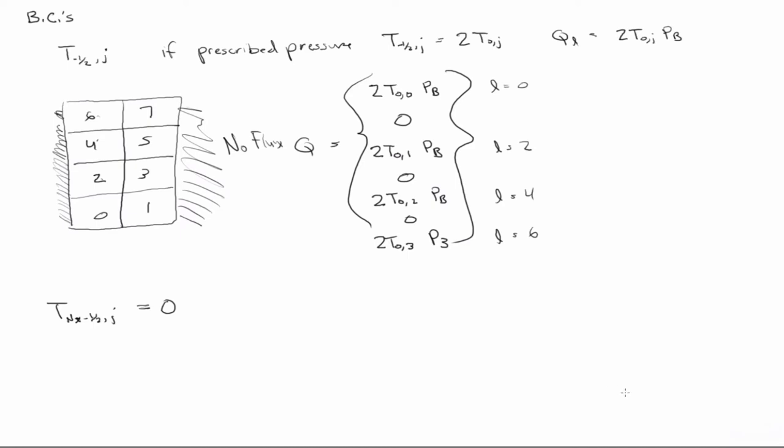And the last thing is how to handle the interblock permeabilities. We just labeled them as k i plus a half j, right? So we need to give that some value.